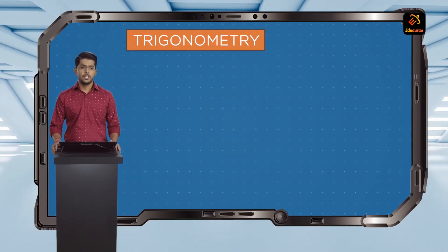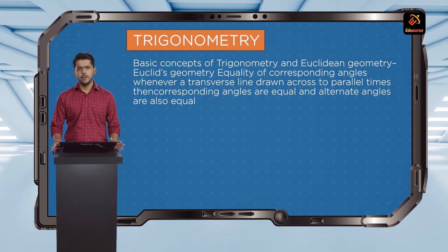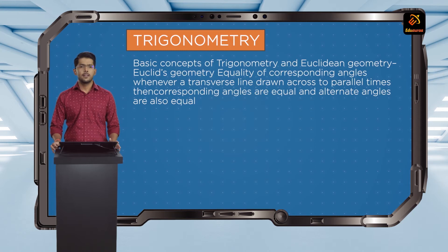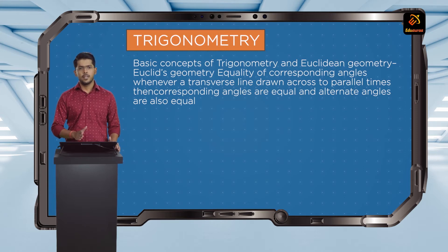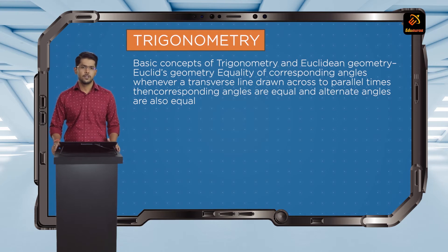When it comes to talking about geometry, we primarily mean Euclidean geometry — the theorems put forward by Euclid. Let's talk about that and then we'll see how this advances into our discussion of trigonometry.